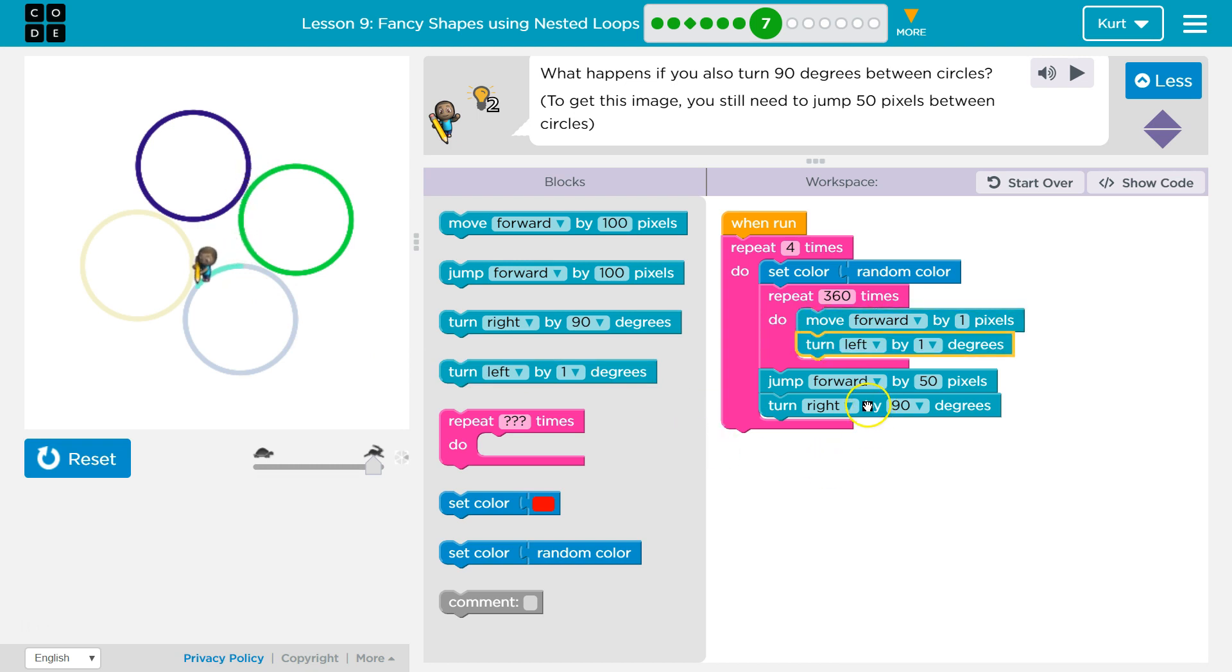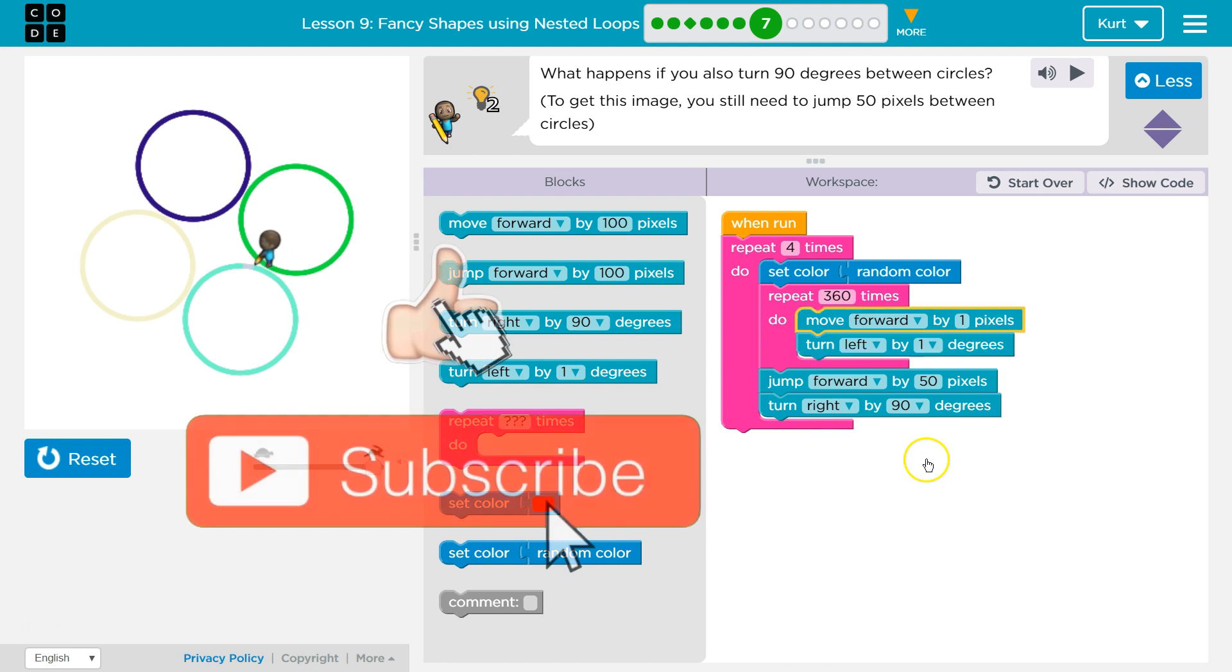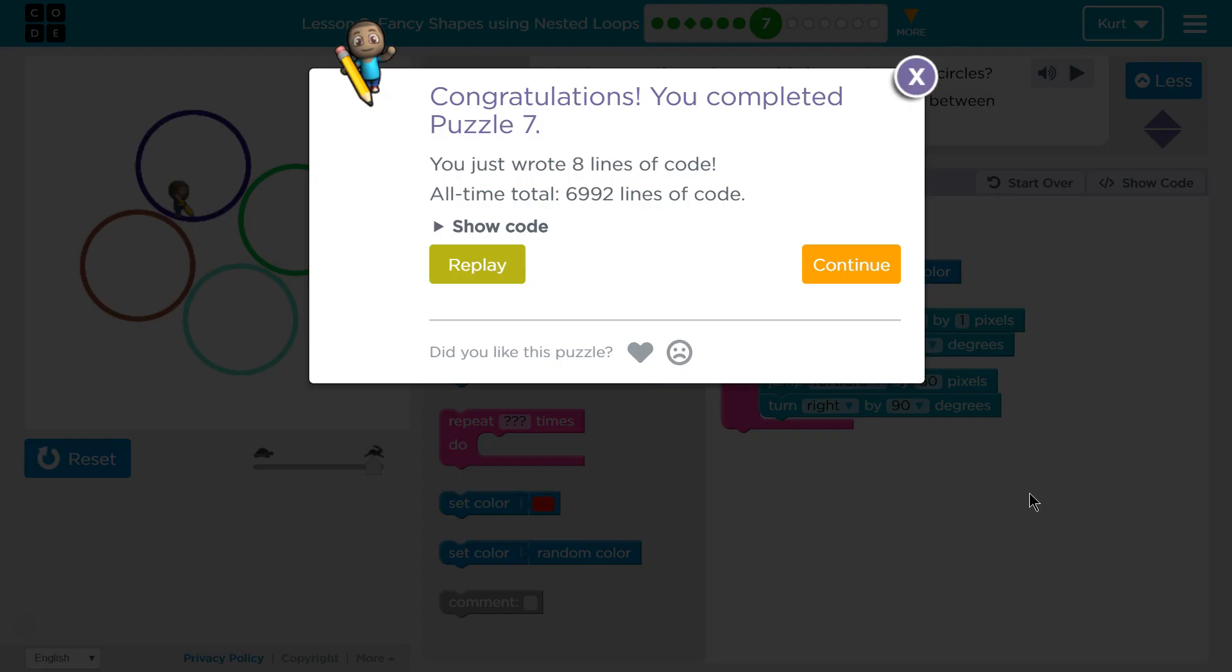If we turn first, we end up jumping somewhere entirely different. That makes sense. And, again, we do it four times. All right. That one was tricky. Awesome. Let's keep going.